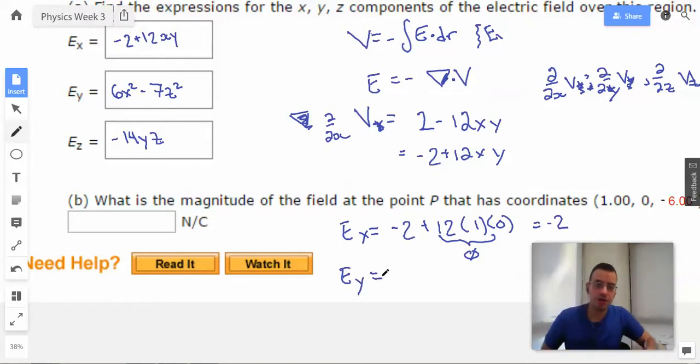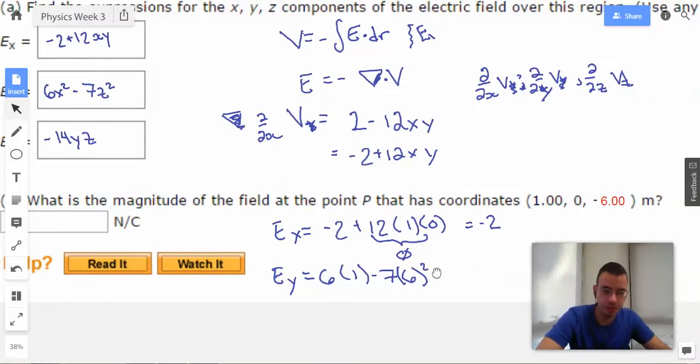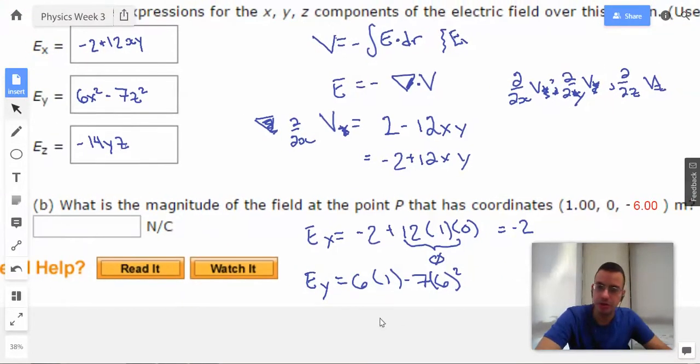We're going to find the magnitude of the y direction, Ey. Then we're going to have 6 times x squared, which is 1, minus 7 times z squared, which is 6 squared. That's actually pretty big. And then we're going to do the z. So z will be negative 14yz. y is going to be 0, so this portion right here will be 0.